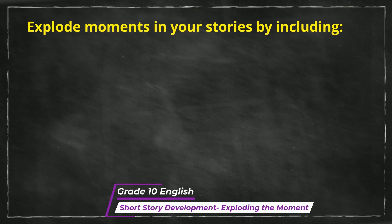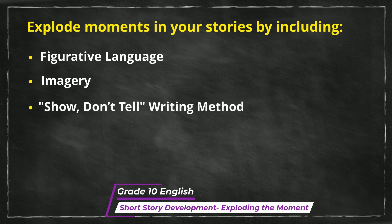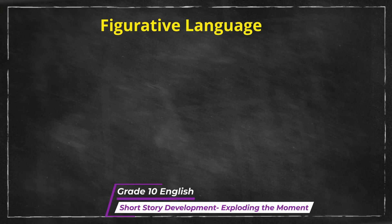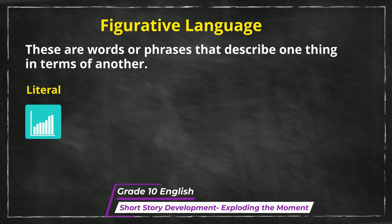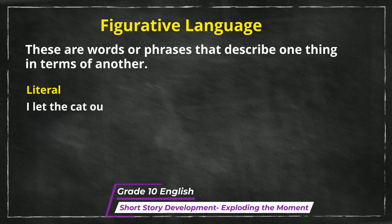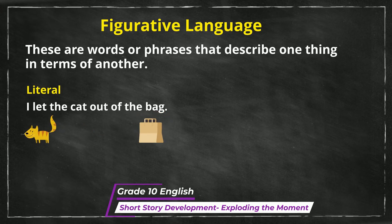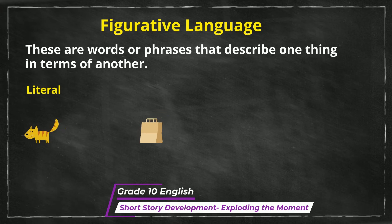You can explode moments in your stories by including figurative language, imagery, and/or the show-don't-tell writing method. Figurative language refers to words or phrases that describe one thing in terms of another and are not meant to be understood at the literal level. Literal meaning is factual — where you mean exactly what you say. For example, 'I let the cat out of the bag' literally means someone let a cat out of a bag; however, figuratively it means that I told a secret that I should not have.